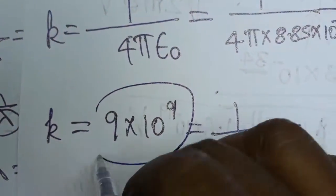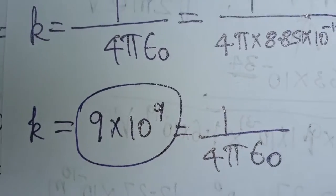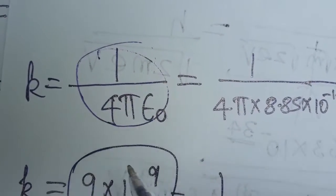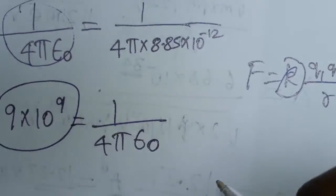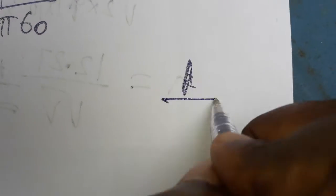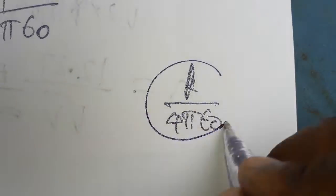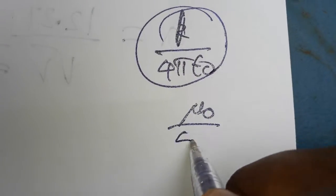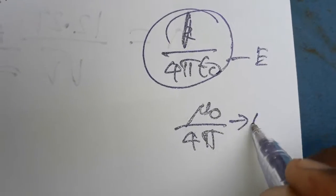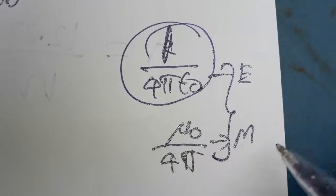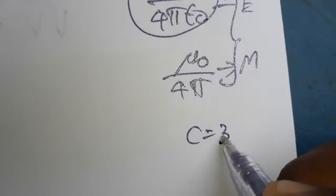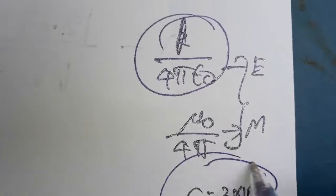Another thing — why we are relating this value: 1 divided by 4 pi epsilon naught is the electric field constant k, and mu naught divided by 4 pi is the magnetic field constant. When we relate the electric field and magnetic field constants, we get the electromagnetic wave speed, c, equal to 3 into 10 power 8.